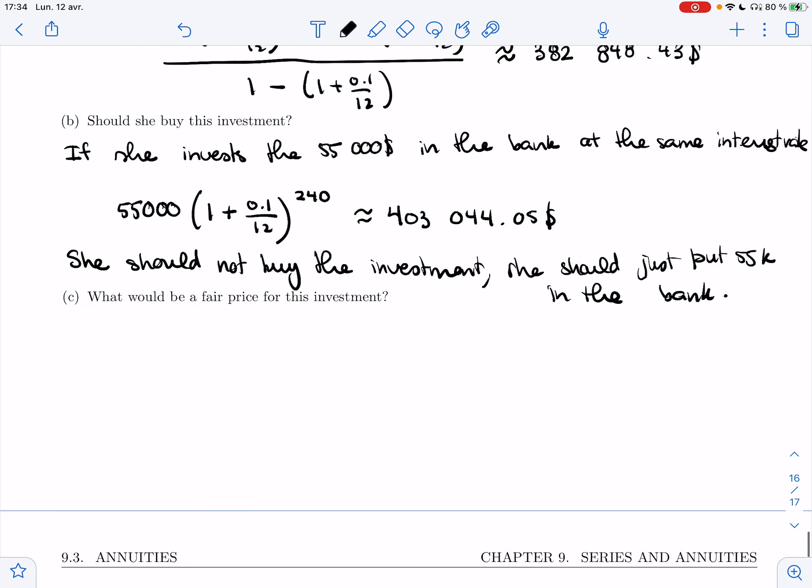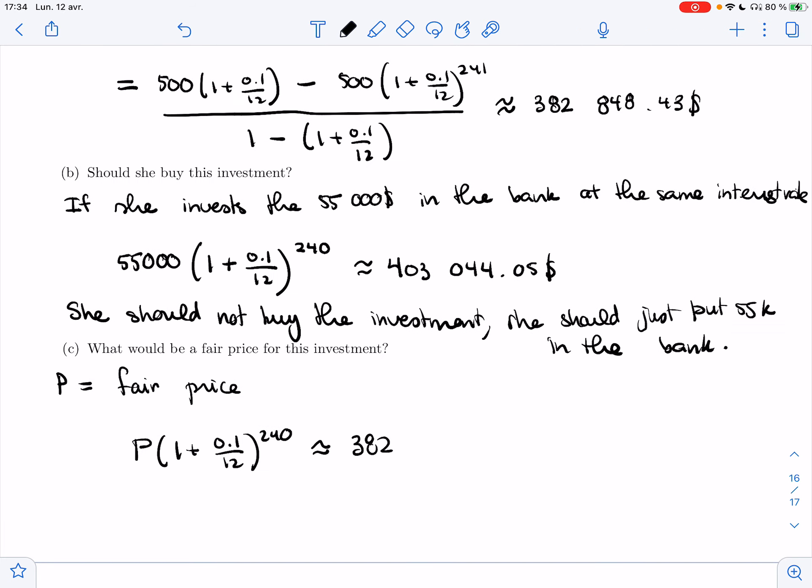So that's P. Let's say P is the fair price. I would need P times (1 + 0.1/12)^240 to be worth that amount that I have in the account in the end. So that's how much this investment is worth in the end. So that's how much this investment is worth in today's money. So P would be $382,848.43 divided by (1 + 0.1/12)^240.